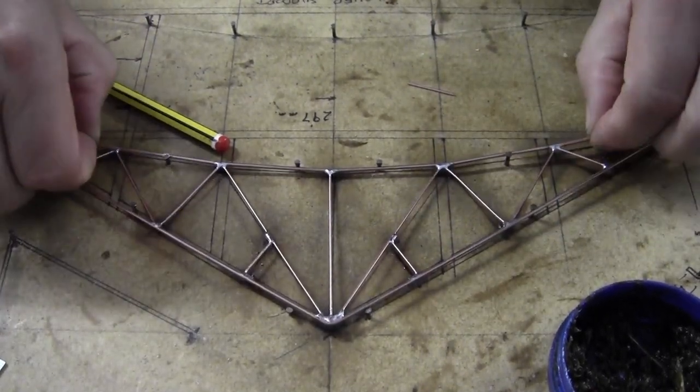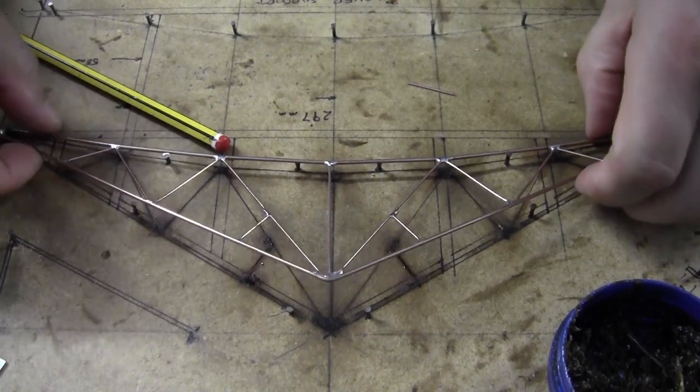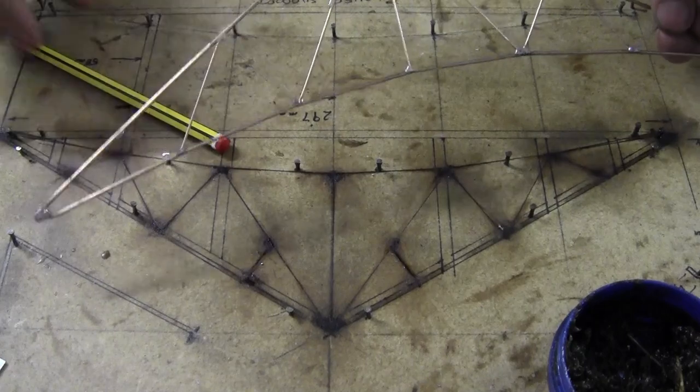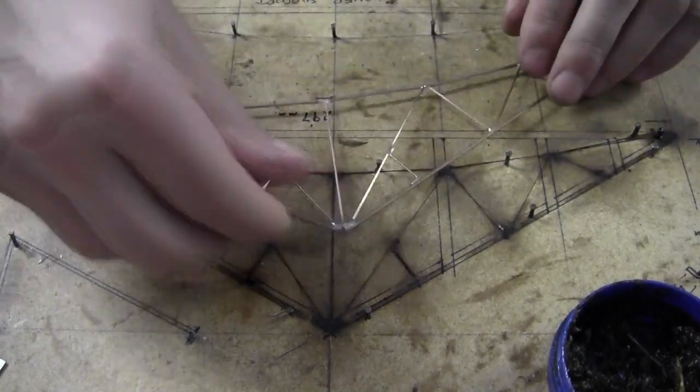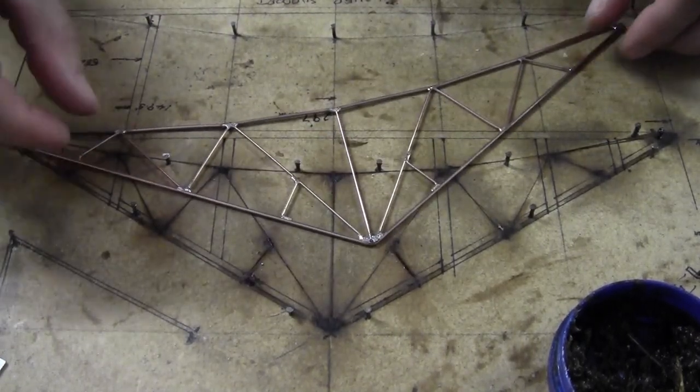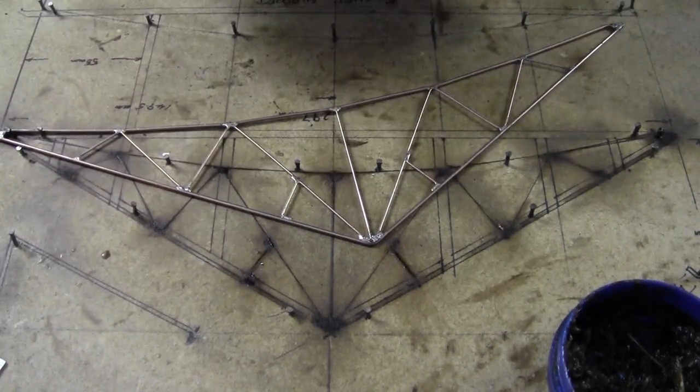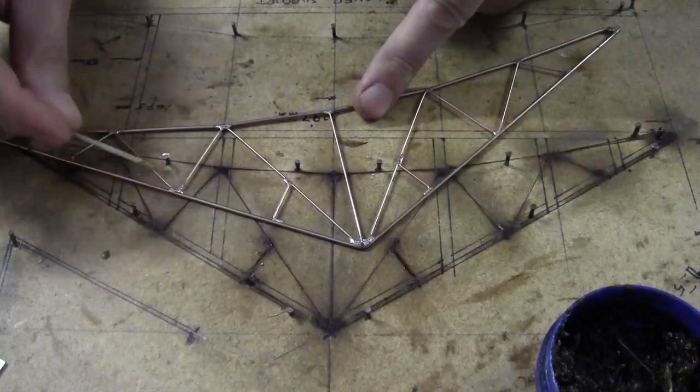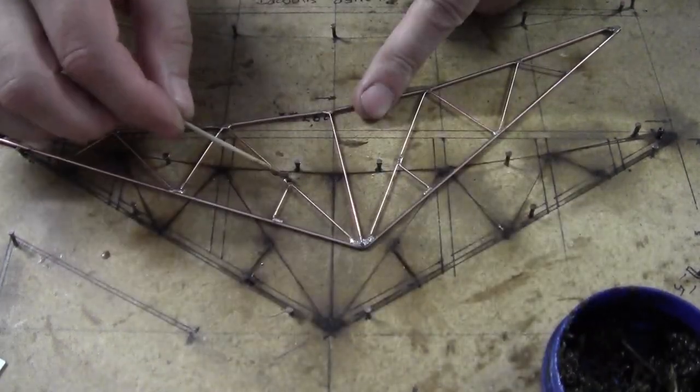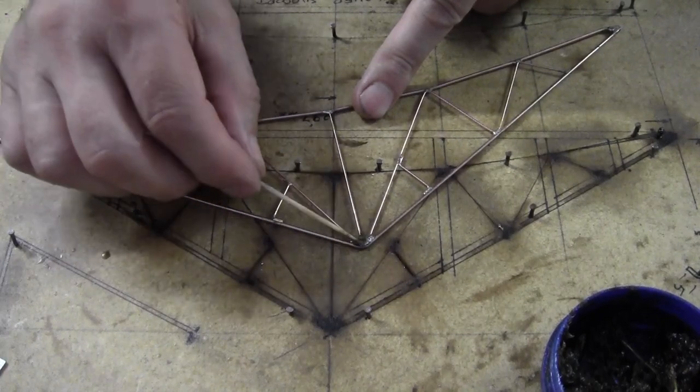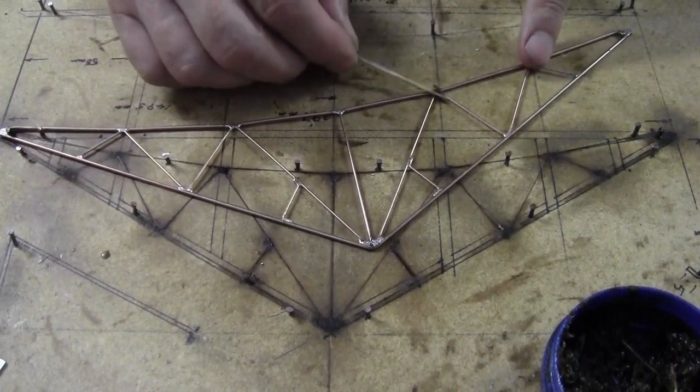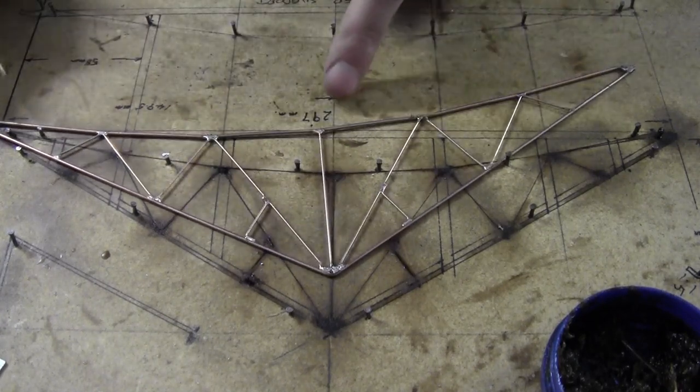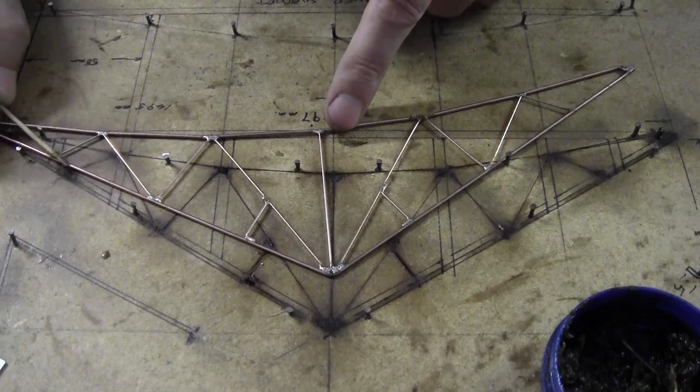And then we'll flip it over, make sure the solder has come through the other side. Yeah, I'm sorry you're watching this upside down, but it's the only way for me to see that I've got all the joints. Just adding a bit of flux in a few places where solder is needed. Yeah, that's good.